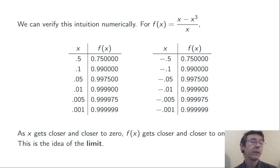We can verify this intuition numerically. Let's take this function and plug in values very close to 0. Here, I've done so from the positive and the negative direction. On the left, I've taken small x values greater than 0, and let those values get closer and closer to 0. And as that happens, the function value gets closer and closer to 1.